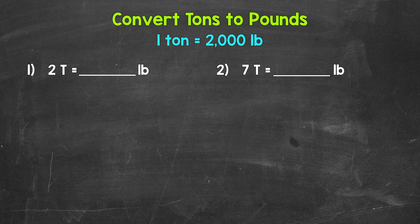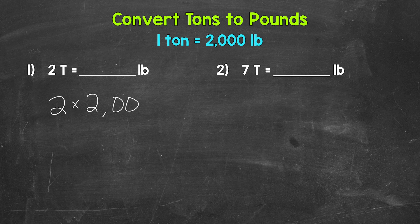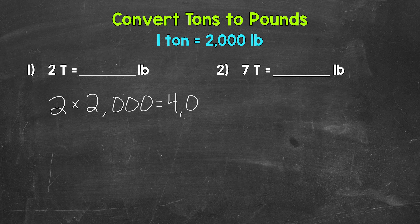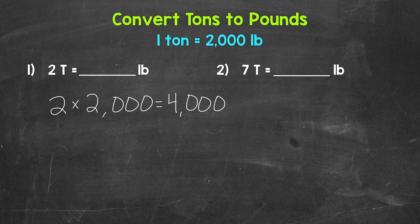Well, each ton equals 2,000 pounds. So we have 2,000 pounds and another 2,000 pounds. In other words, two times 2,000. When we go from tons to pounds, we multiply by 2,000. Now two times 2,000 gives us 4,000. Two tons equals 4,000 pounds.